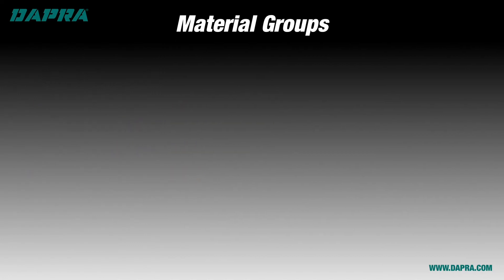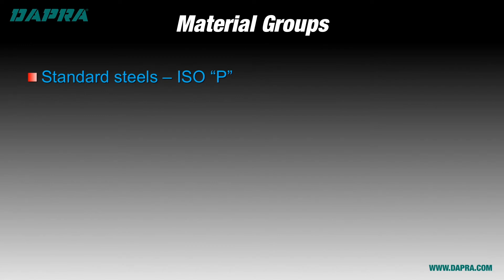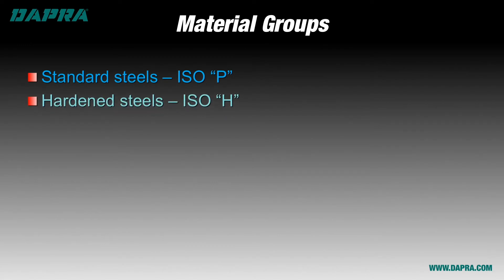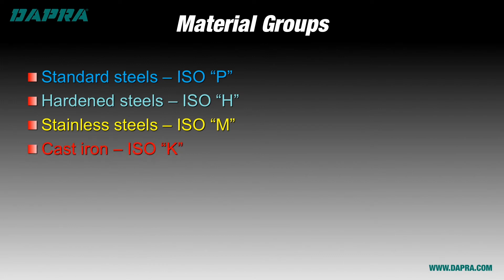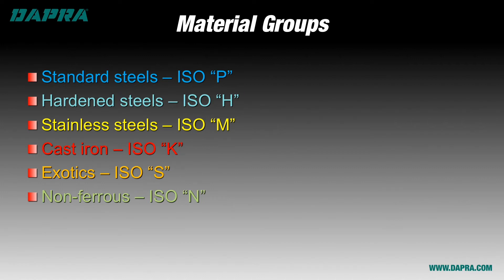There are six primary material groups for machining: standard or non-heat-treated steel, hardened steel, stainless steel, cast iron, exotics, and non-ferrous materials. Let's take a quick look at each of them and the general guidelines for choosing your carbide grades for each material.